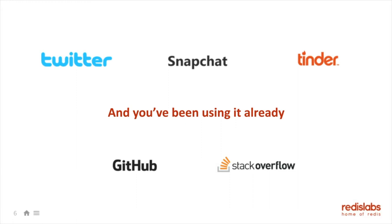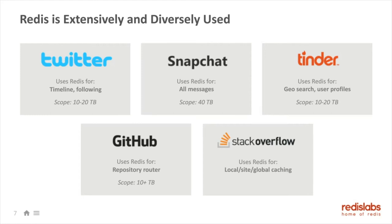To give you some idea of how they're using Redis: Twitter uses it for their timeline and following — every time you go into the app, the feeds of your tweets are served directly from Redis. Only when you tweet does it go to a relational database in the backend, while microservices populate your personalized timeline inside Redis. Snapchat uses it for all their messages. Tinder uses Redis geospatial data types for user profile searches. GitHub uses it as a repository browser, and Stack Overflow caches their entire website inside Redis.